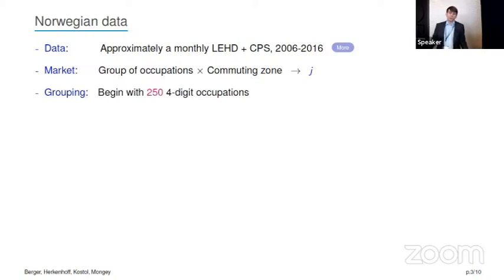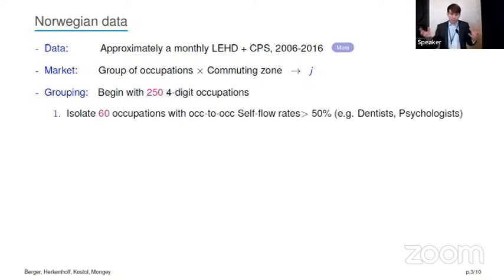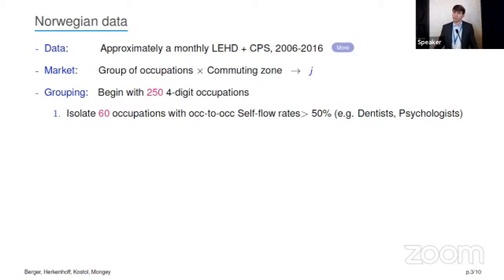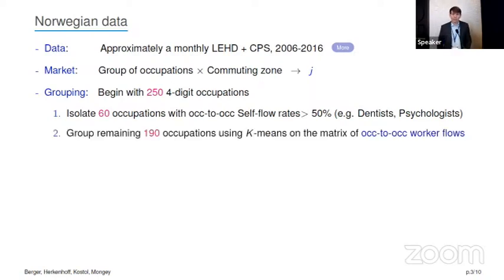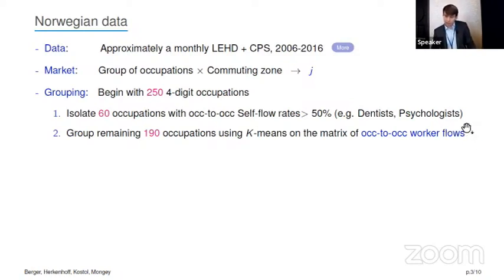We begin with the 250 four-digit occupations present in Norwegian data — think dentists, psychologists, and the like. In a first pre-processing step, we isolate 60 of these occupations with extremely high self-flow rates, where the flow rate conditional on making a job move back into its own occupation is greater than 50%. These are your usual suspects — highly occupation-licensed occupations like dentists and psychologists. The remaining 190 occupations we cluster using a K-means algorithm on the lower-dimensional object of the occupation-to-occupation worker flow matrix — a 190 by 190 matrix where rows tell you where you begin and columns tell you which occupations you end up in the next month.